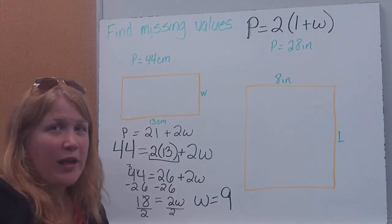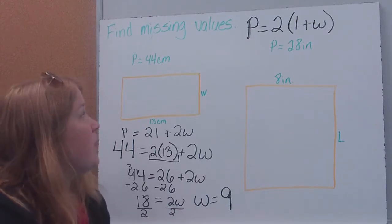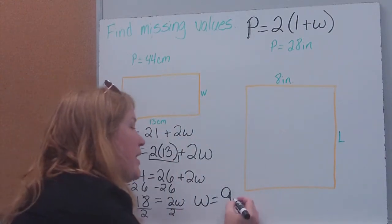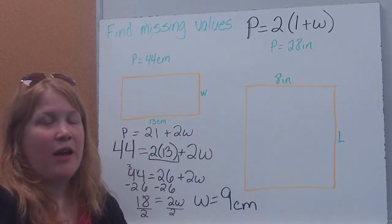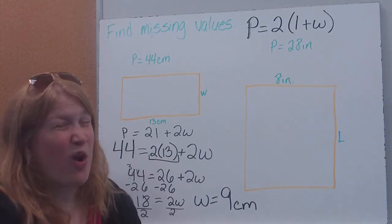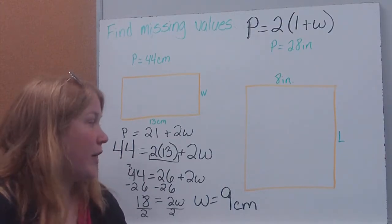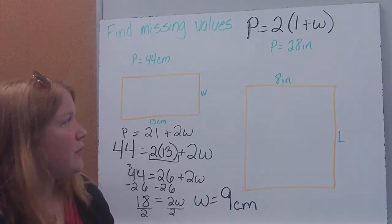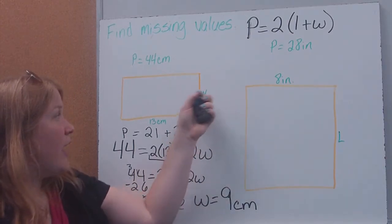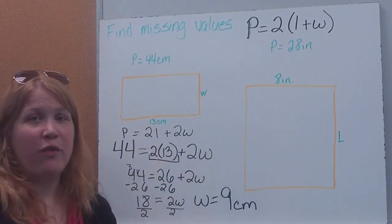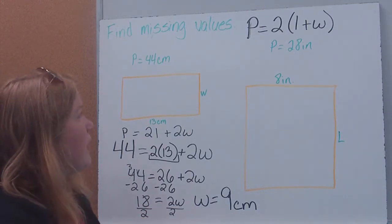Now, 9 is my answer. However, we're not done because 9 tells me nothing. Is it chickens? Is it cows? Is it feet? Is it miles? So look back up here. We're dealing with centimeters. So we need to make sure that we are labeling our answer. If we don't label the answer, it'll be marked wrong on quizzes and tests. But it's also good because we want to be specific. We want to know what we're talking about. 9 centimeters, not just 9. And then again, if you wanted, you could plug your 9 in here, and you could do your operation to make sure that you get 44 to check your answer.